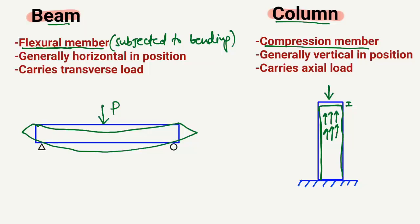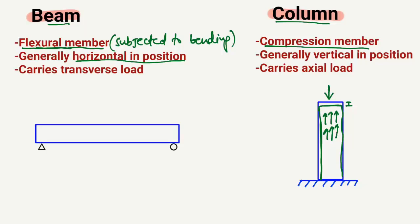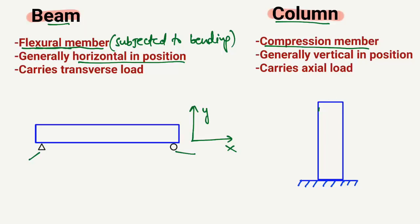The second main difference is that a beam is generally horizontal in position. If you look at the beam here, it is always horizontal — laid along the x-axis and supported horizontally by a hinge support and a roller support. In the case of a column, it is always laid vertically along the y-axis — not horizontally as we see with the beam. So the column is generally vertical in position.